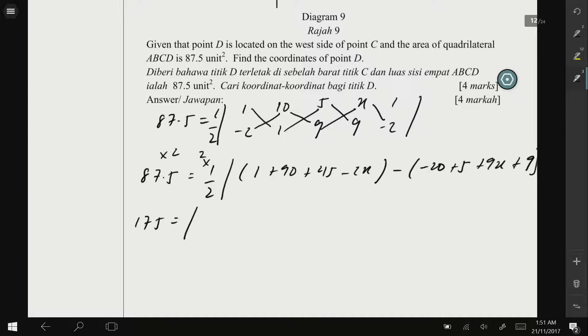Solving or simplifying the terms inside the bracket: 1 plus 90 plus 45, you should get 136 minus 2x minus 2x, and here you should get -6, -9x.